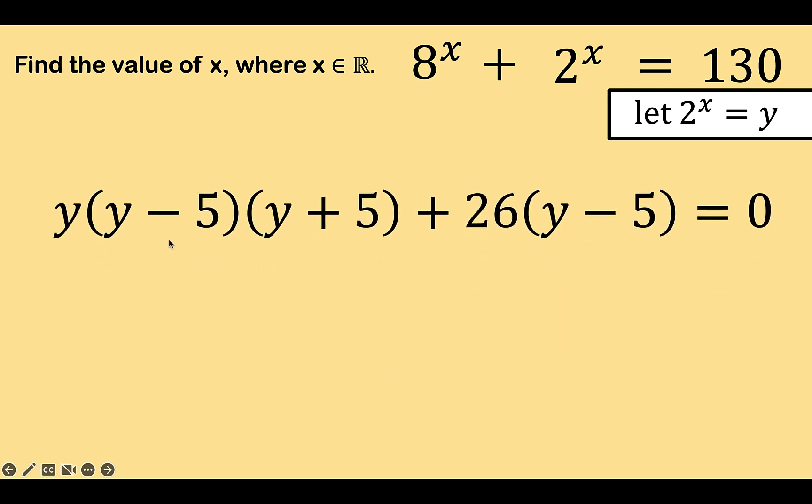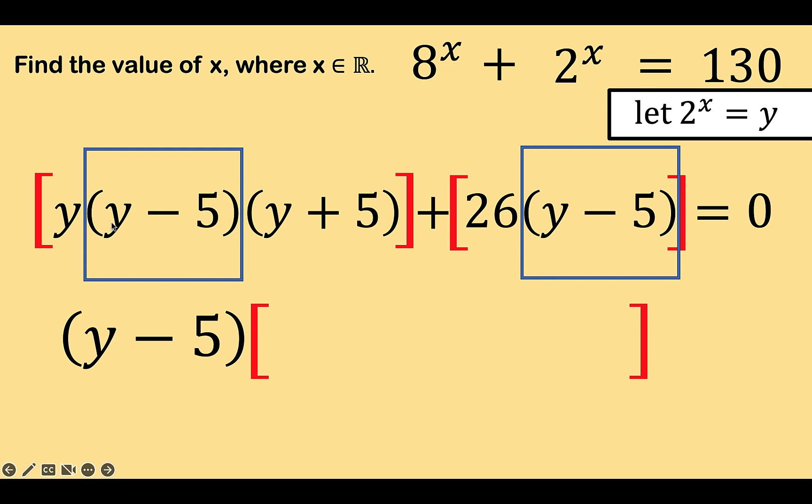Now, notice that this y minus 5 and this y minus 5 are common factors as well. So, we can perform again factoring by grouping. And this is now what we have. Group this as one group and group this part as another group equals 0. y minus 5 is common to these two groups. So, factoring out now y minus 5, we now have this entire expression divided by y minus 5. So, we can cancel y minus 5 out. What's left is y times the quantity y plus 5 plus 26. Then, copy equals 0.